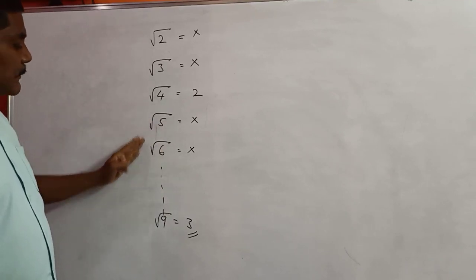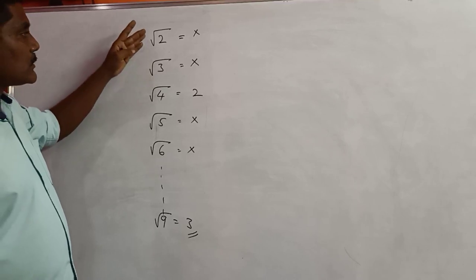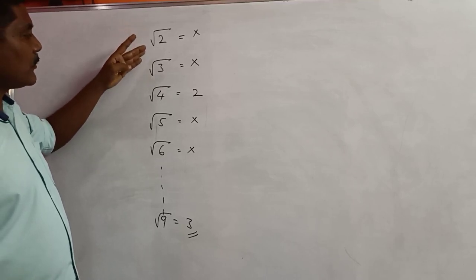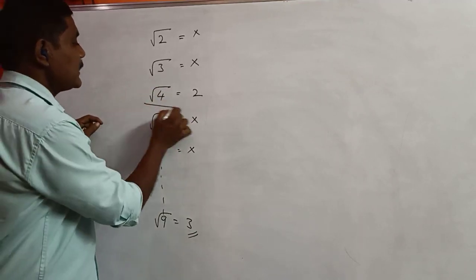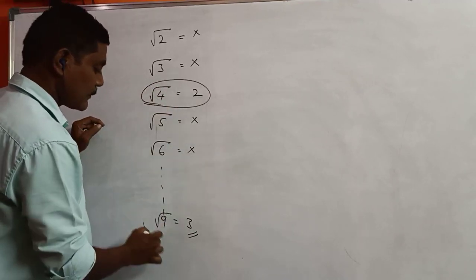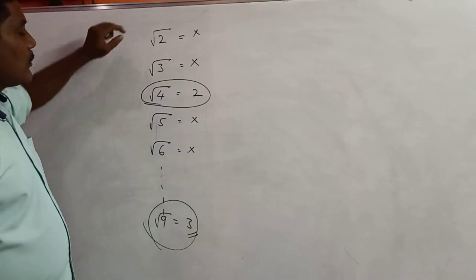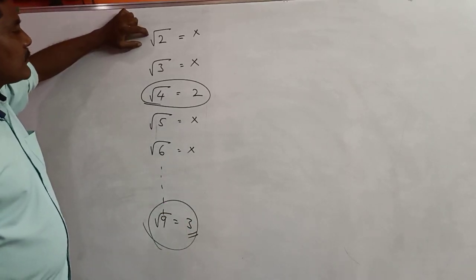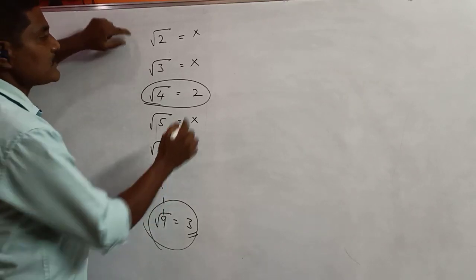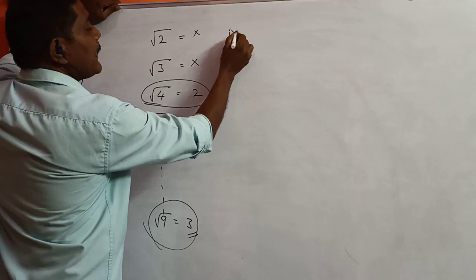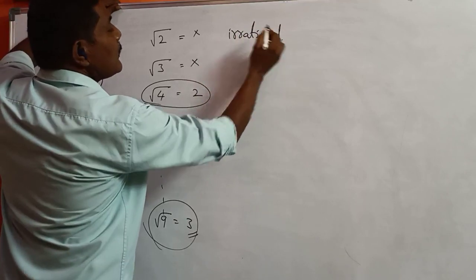In these numbers, some we cannot find the square roots. Those numbers are called irrational. Some numbers have square roots — those we can find. The numbers whose square roots we cannot find exactly are called irrational numbers.